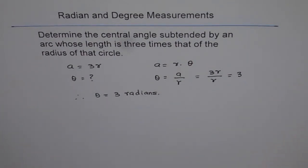And one radian means it is an angle subtended by an arc whose length is equal to that of the radius. So from the definition we get our answer. Thank you.